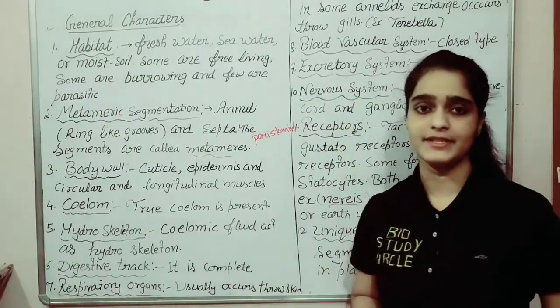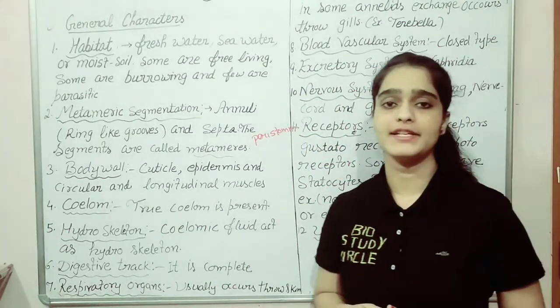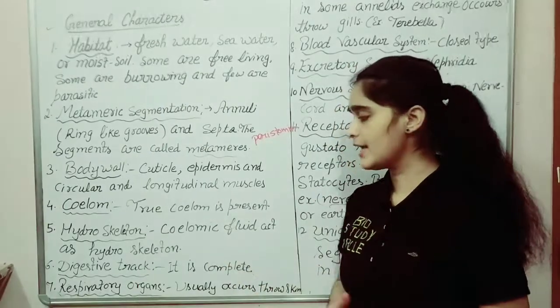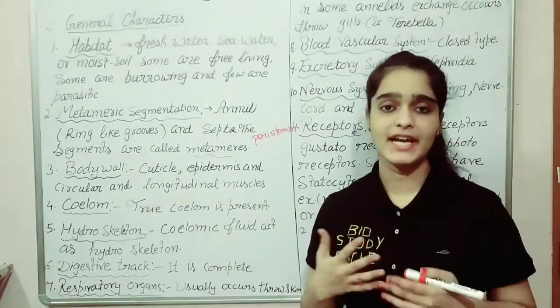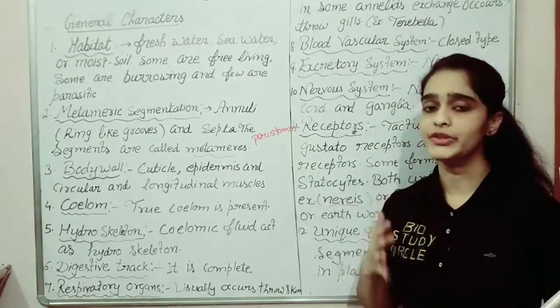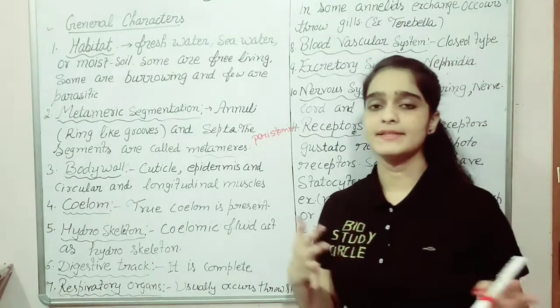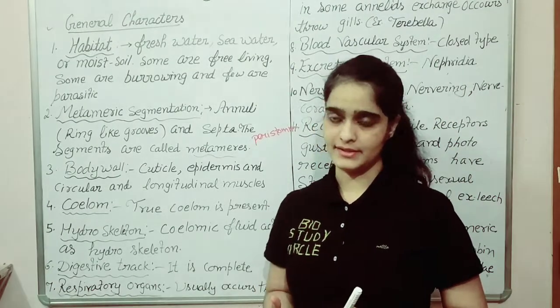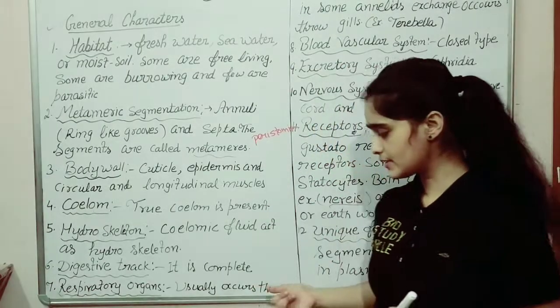The digestive system is complete — a complete digestive system is present in annelids, with both mouth as well as anus present.